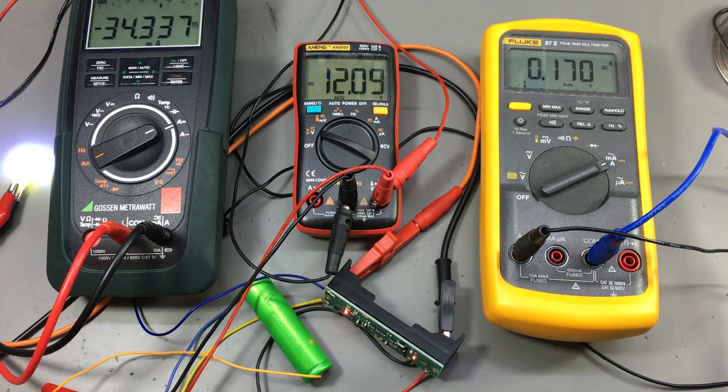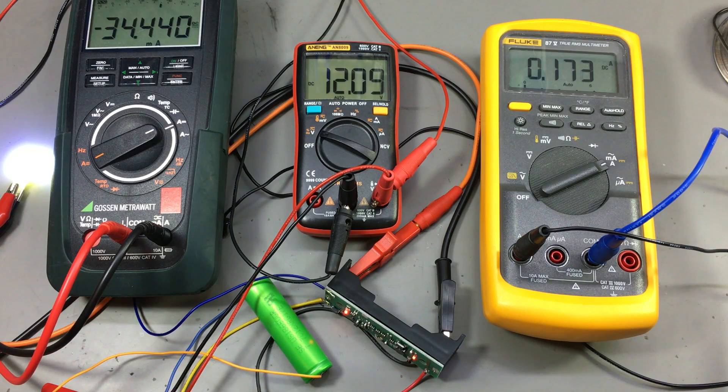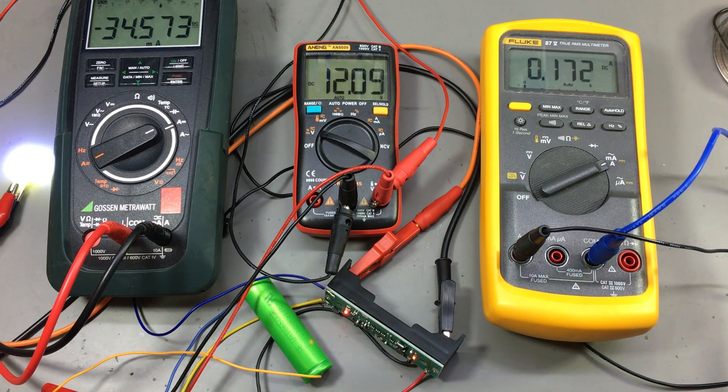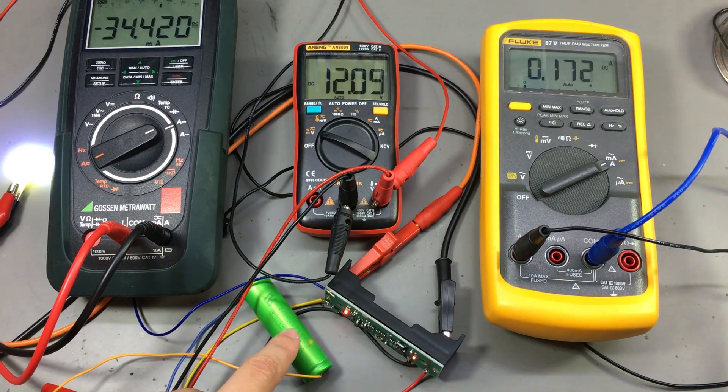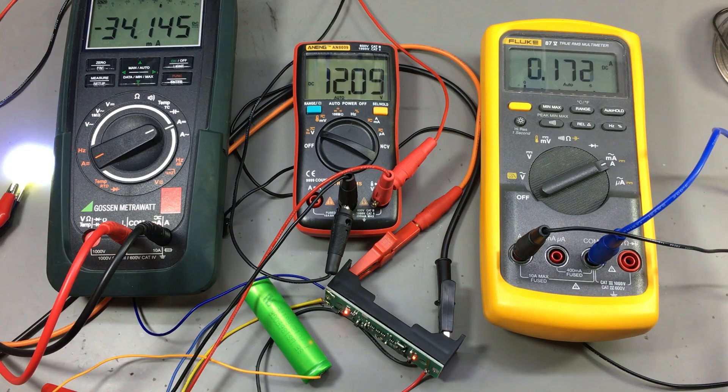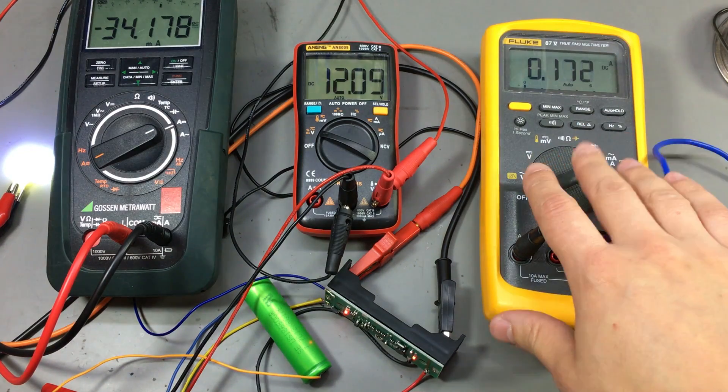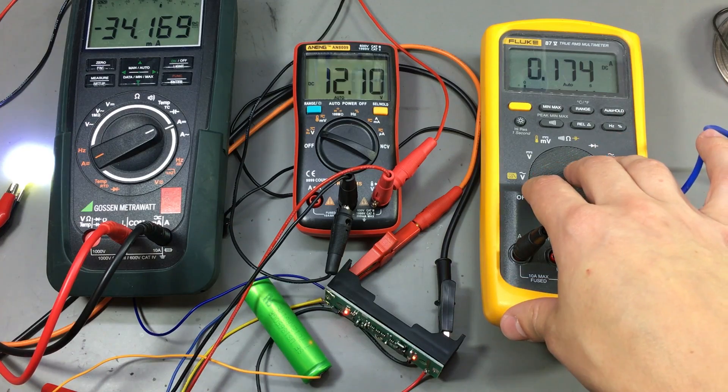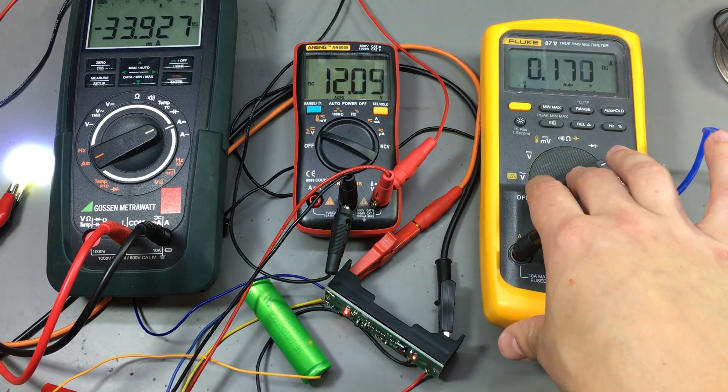And now let's do a quick test to see how the UPS functionality works. I have the 5V input powered from my bench power supply. I also have this battery connected to the battery terminals, and I have an ammeter in series with each input source.